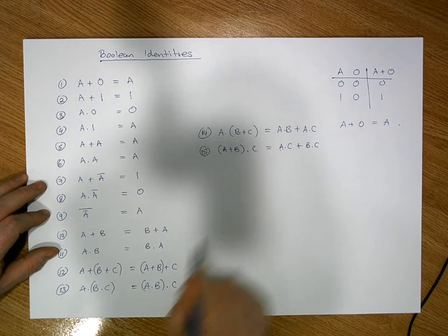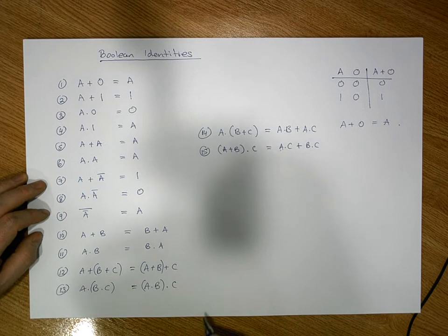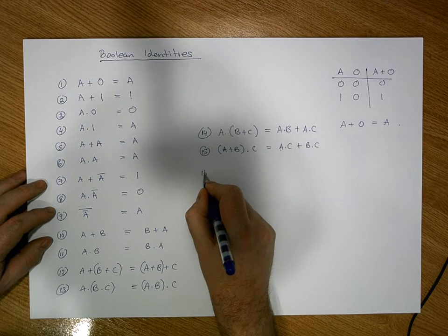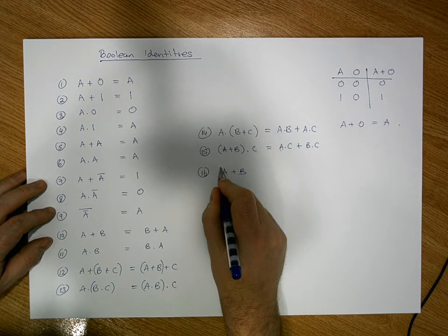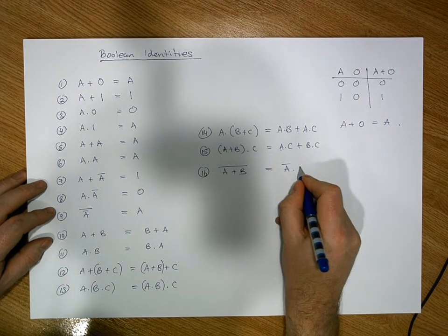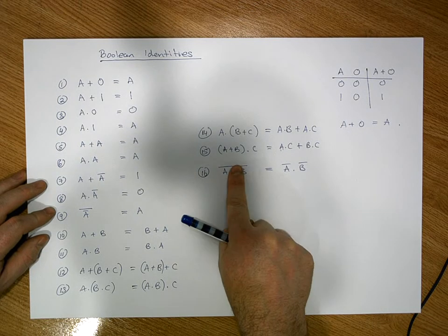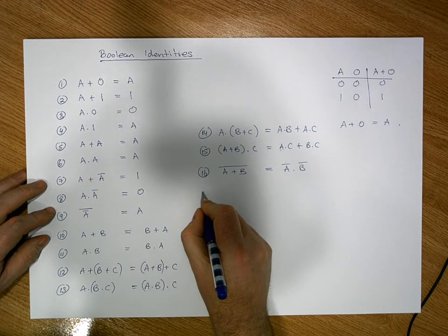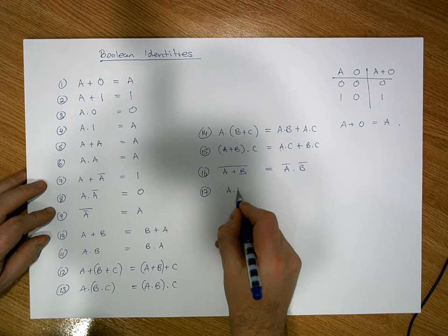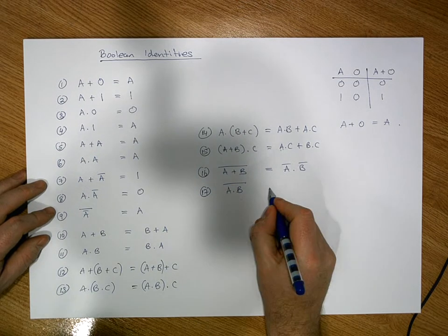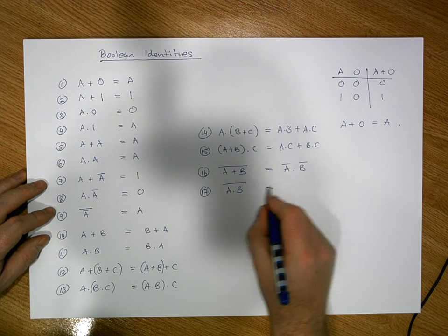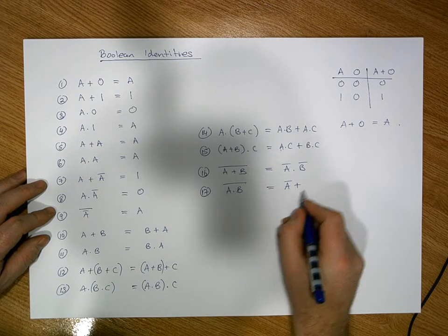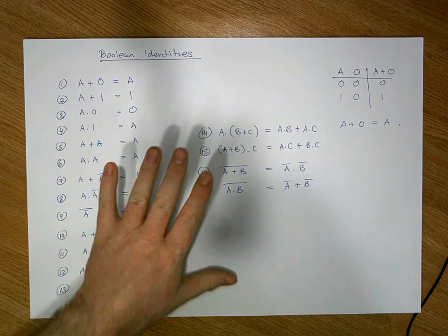Then we have De Morgan's laws, familiar from propositional logic and set theory. Identity sixteen: the complement of (A OR B) equals Ā AND B̄ — break the bar, flip the sign; ORs become ANDs. Identity seventeen: the complement of (A AND B) equals Ā OR B̄ — break the bar, flip the sign; the AND becomes an OR. So that gives us seventeen important identities.